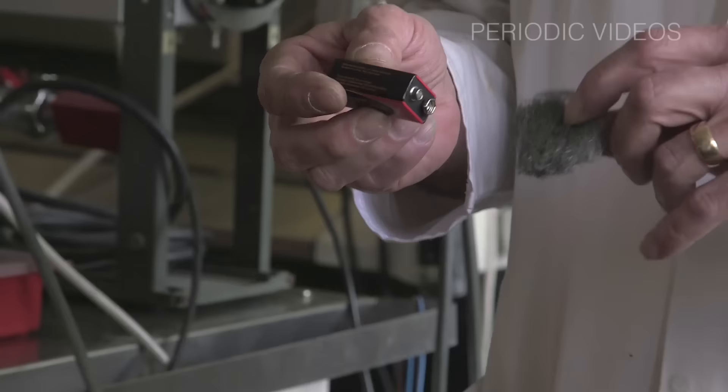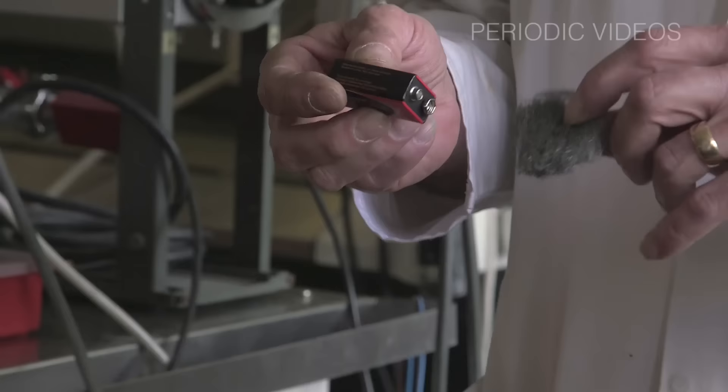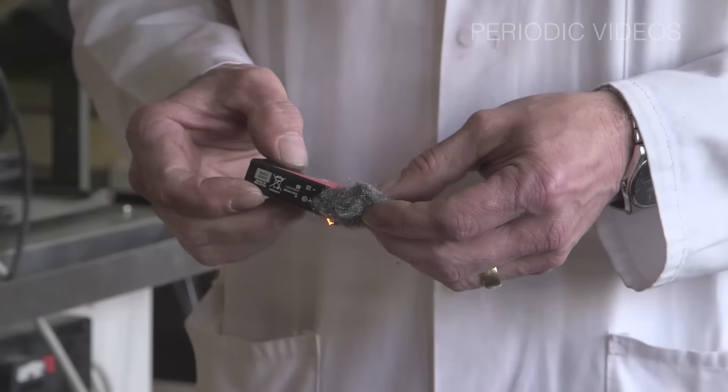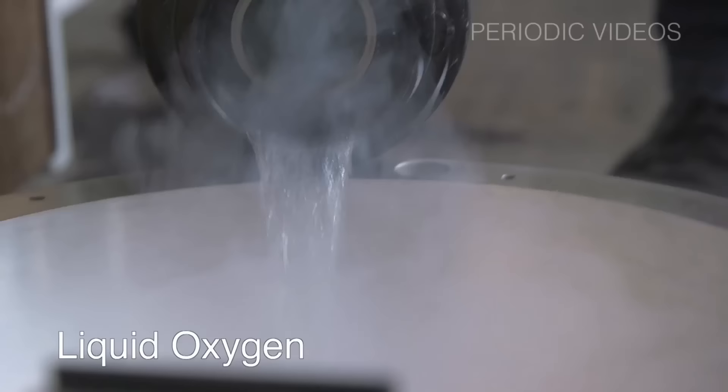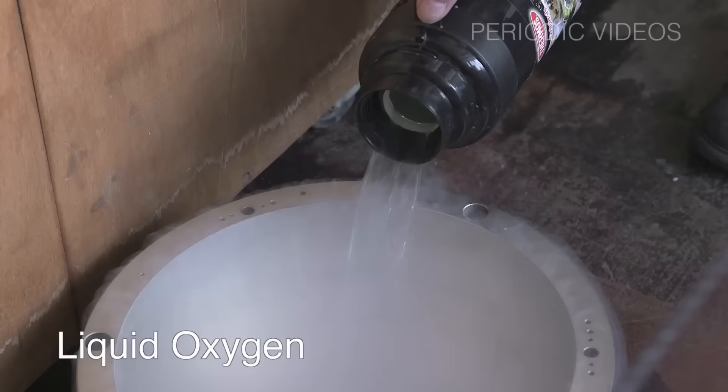So the experiment they decided to do was to drop a piece of burning iron wool. This is finely divided iron wire that looks a bit like my hair, slightly darker, and you can light such iron wool by putting it across the terminals of a small battery, and it glows red and you can see it burning in the air. Not very vigorously, but enough to stay red.